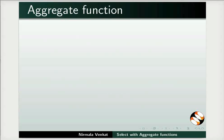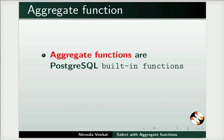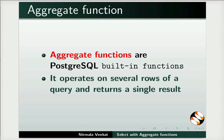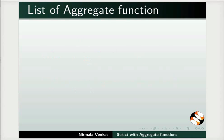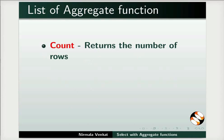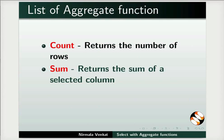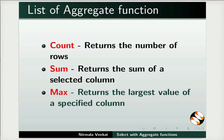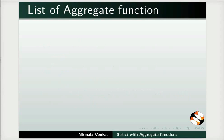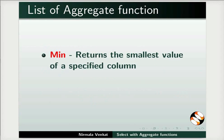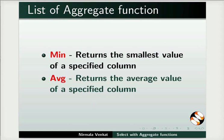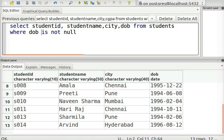Let us now learn about aggregate functions. Aggregate functions are PostgreSQL built-in functions that operate on several rows of a query and return a single result. The list of aggregate functions includes: COUNT, which returns the number of rows in a table; SUM, which returns the sum of a selected column; MAX, which returns the largest value; MIN, which returns the smallest value; and AVG, which returns the average value for a specified column.